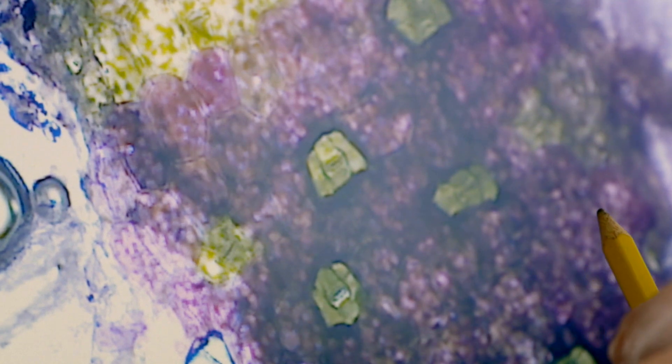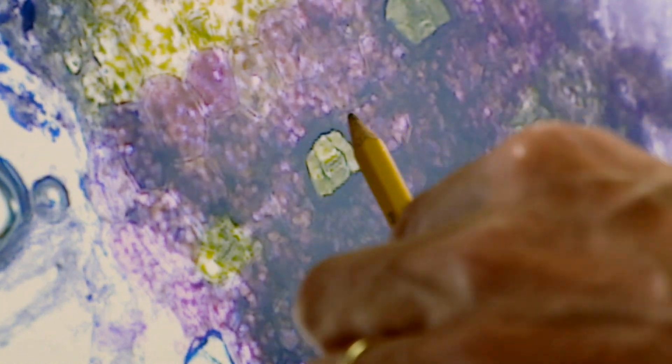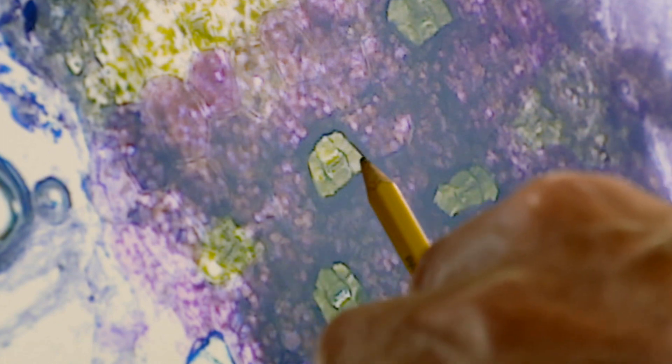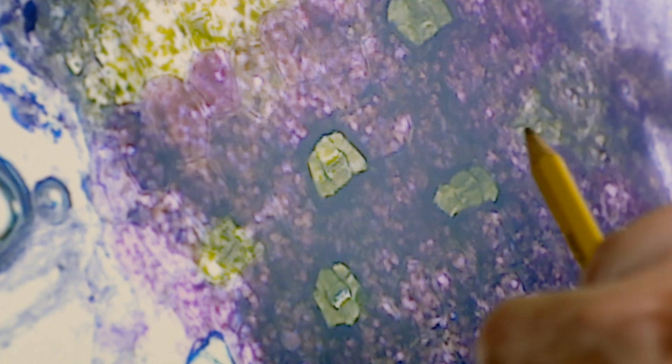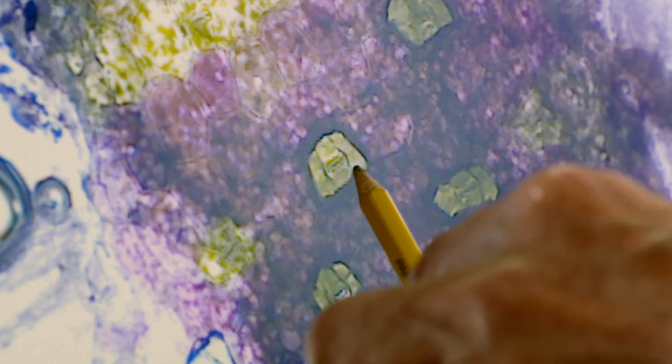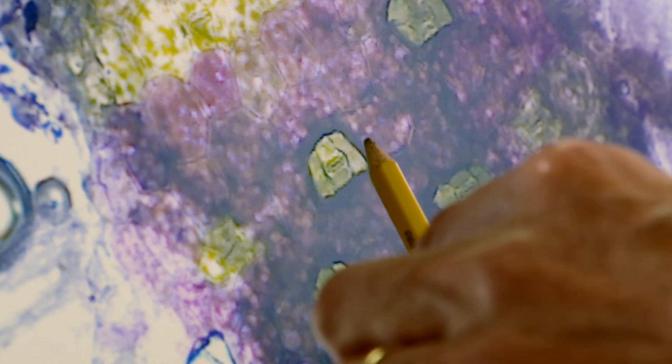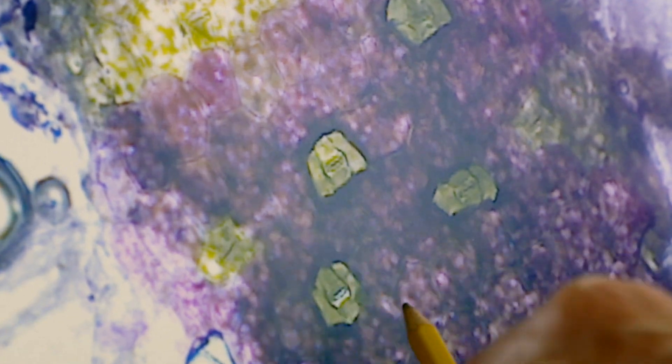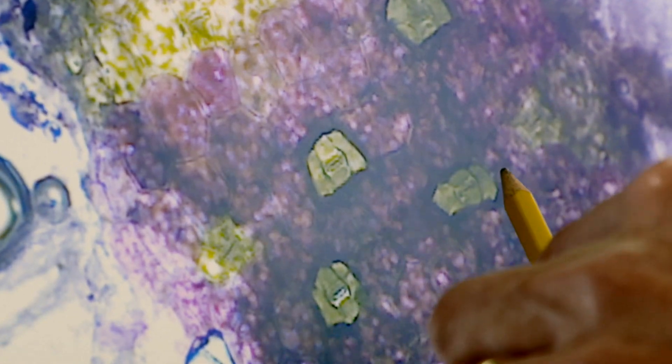Within those cells of the epidermis, we have structures that are called estomas. The estomas are small openings, like little pores. This is an estoma, this is another estoma, this is another estoma, this is another.